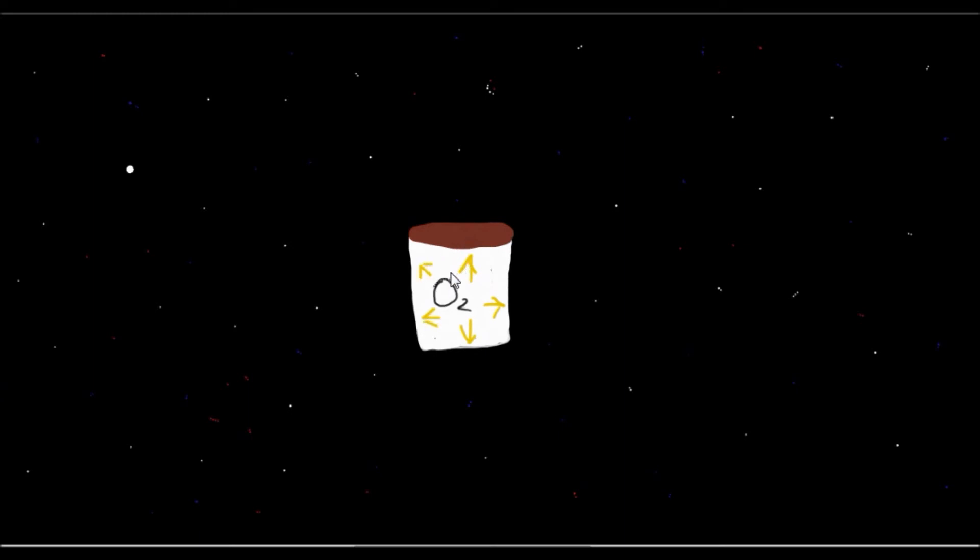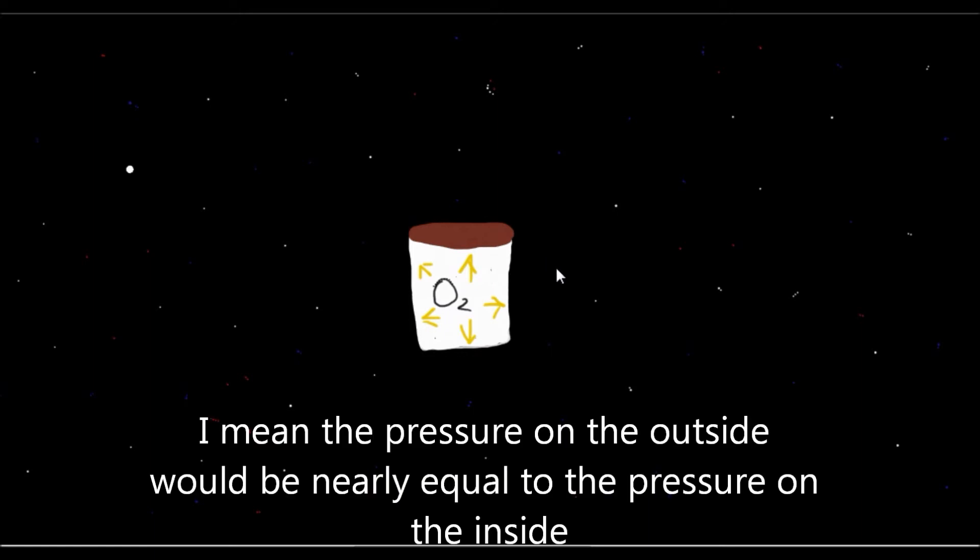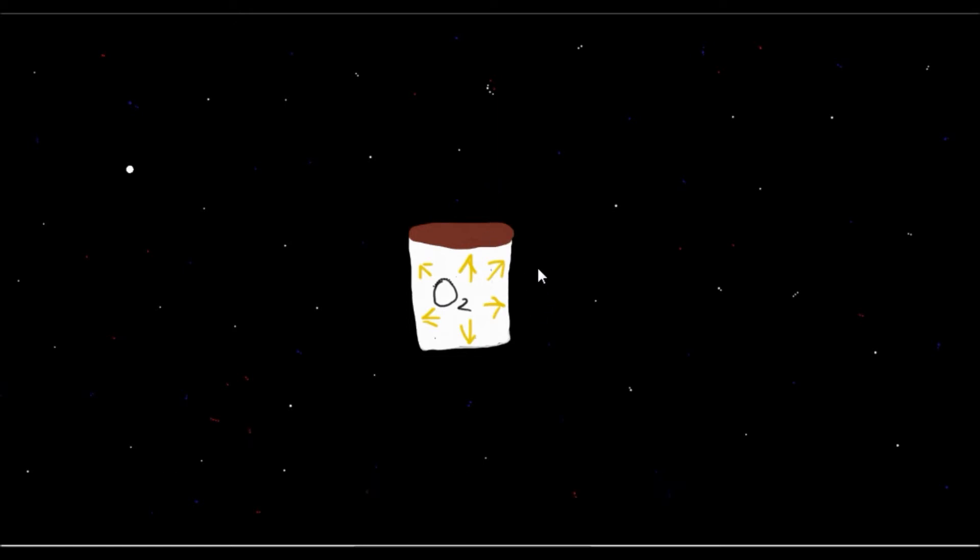I would assume that on Earth, the pressure on the outside of the jar would be equal. However, in outer space, there's just space. There are no molecules pushing towards the jar, which means the only pressure we have is the outward pressure. And this is a very uneven pressure. If the jar is strong enough to handle it, then this jar could just keep floating in outer space forever.